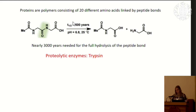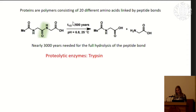In vivo we have enzymes that very efficiently do this reaction. Trypsin is probably the best known enzyme, also used in proteomics — it very efficiently and quickly hydrolyzes the peptide bond after certain amino acids, specifically arginine and lysine. Trypsin works well and is very selective.